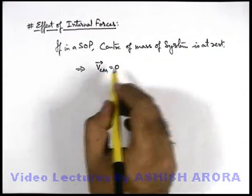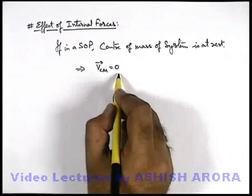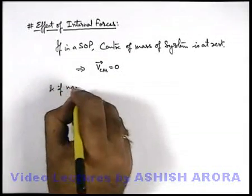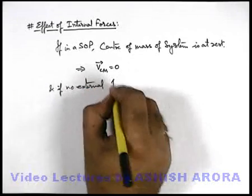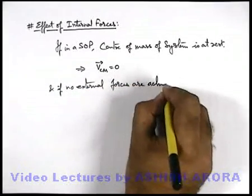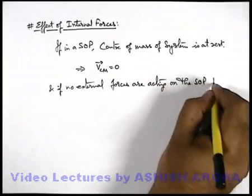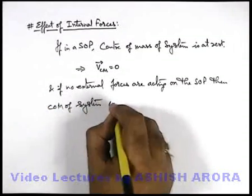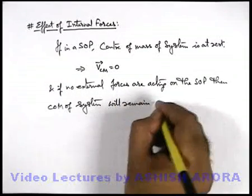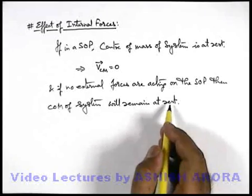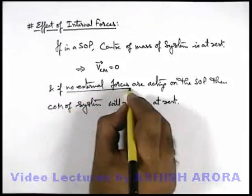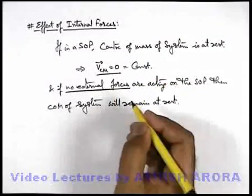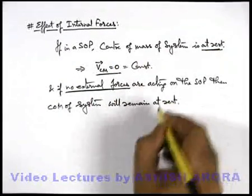That means acceleration can cause the centre of mass to move. In this situation, if the centre of mass of a system is at rest and if no external forces are acting on the system of particles, then the centre of mass will remain at rest. This is a self-explanatory statement: if no external forces are acting, that means centre of mass acceleration is zero, velocity won't change, so it will remain constant. If initially the centre of mass was at rest, it will remain at rest.